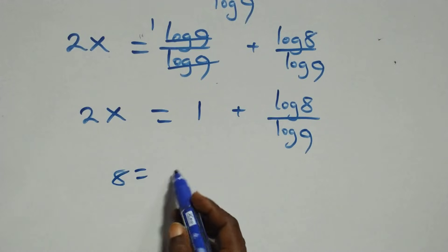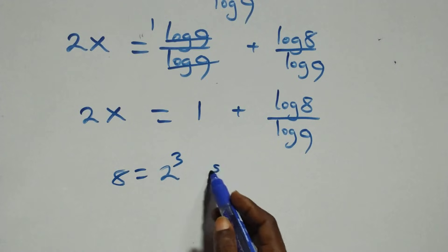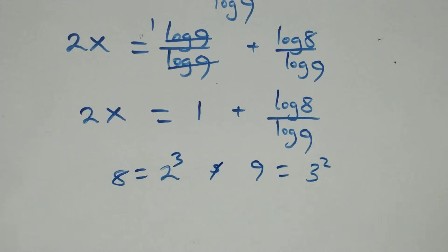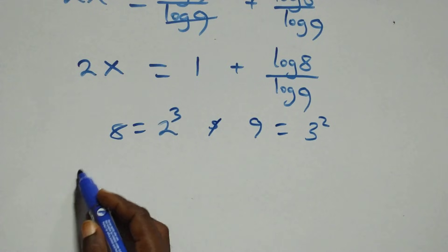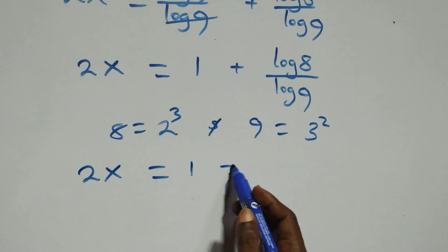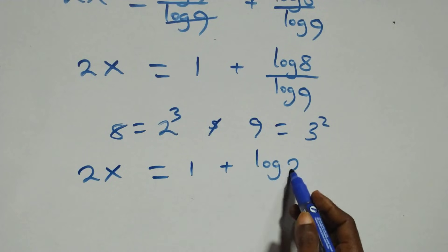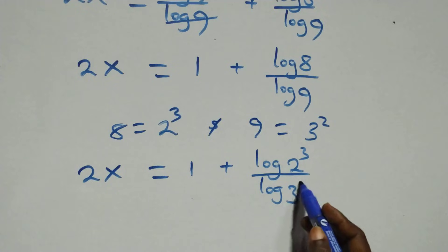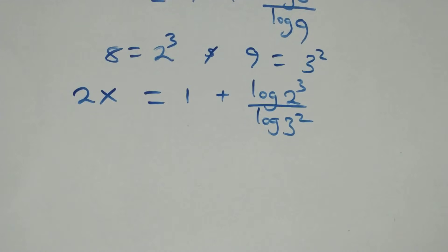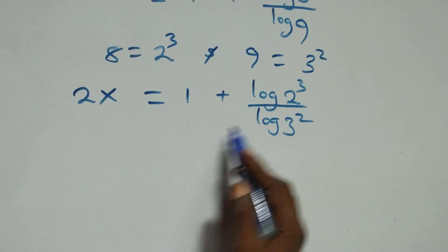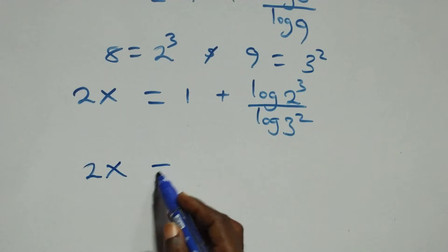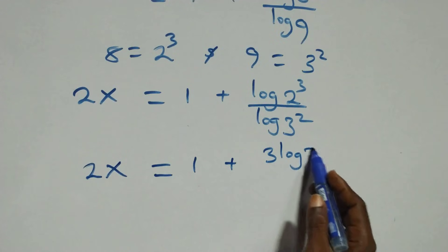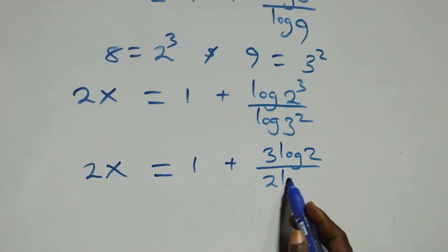From here, we can write 8 as 2 times 2 times 2, that's 2 raised to power 3, and also 9 as 3 times 3, that's 3 squared. So all we have becomes 2x equals to 1 plus log(2³) over log(3²). Applying the power log rule, 3 comes down and 2 comes down, and we have 2x equals to 1 plus 3 log 2 over 2 log 3.